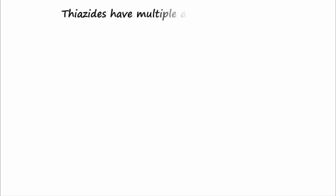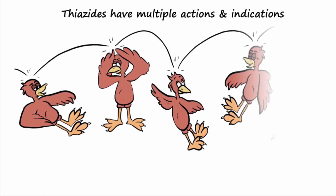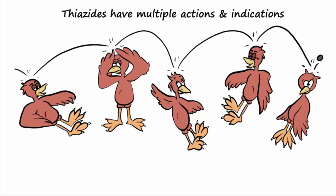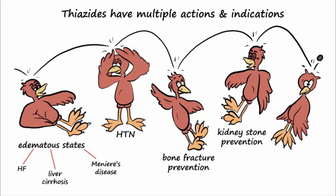In summary, thiazide diuretics have multiple actions and indications. They are useful for edematous states for pulling off water, such as with heart failure, liver cirrhosis, and Meniere's disease. They are also useful for hypertension, bone fracture prevention, to prevent the most common type of kidney stone — calcium-containing stones — and for diabetes insipidus.